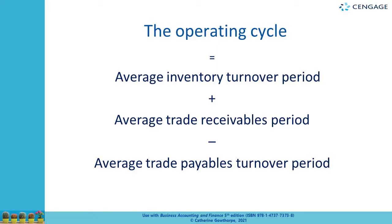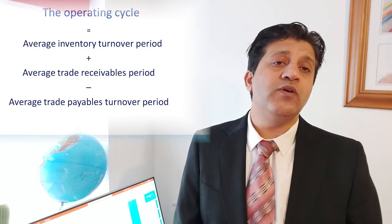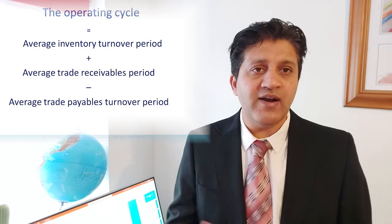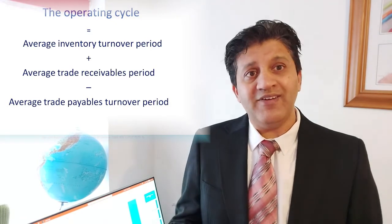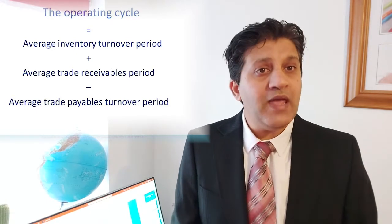The first ratio is inventory days, or inventory turnover period. This ratio tells us how long it takes us to sell our inventory — the shorter the period, the better. The second ratio is the accounts receivable period, which tells us how long it takes to recover money from our credit sales — again, the shorter the better.